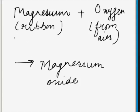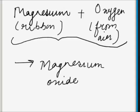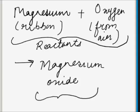Magnesium and oxygen are reacting and producing magnesium oxide. The substances which take part in a chemical reaction are called reactants. In this reaction, magnesium and oxygen are reactants. The new substance which is formed is called a product. In this reaction, magnesium oxide is the product. In a chemical reaction, reactants are transformed into products.